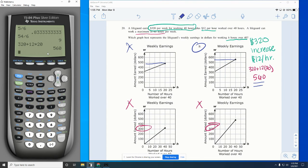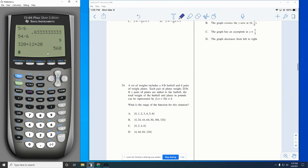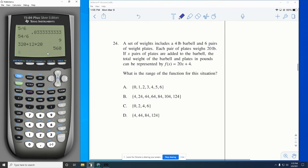Okay. And then for the last one, if you can scroll two more pages for me, we're going to look at number 24. It's another weird one. A set of weights includes a four pound barbell and six pairs of weight plates. Each pair of plates weighs 20 pounds. If X pairs of plates are added to the barbell, the total weight of the barbell and plates in pounds can be represented by F(x) equals 20x plus 4. What is the range of the function for this situation?